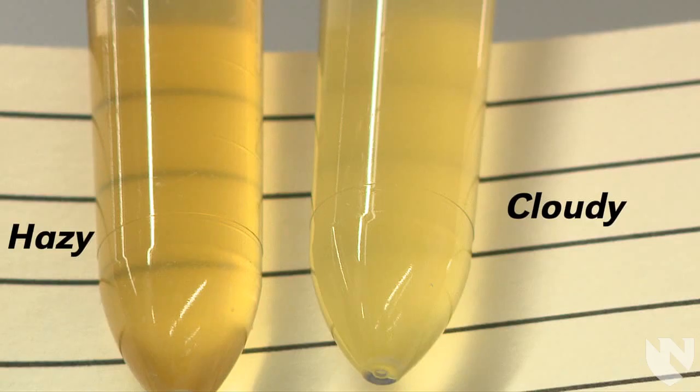Next, we have a hazy urine versus a cloudy urine. In the cloudy urine, we can hardly see the lines on the card and you can see some of those particles we mentioned.